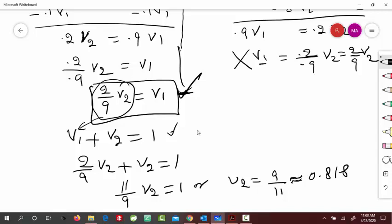And then V1 would be equal to, because the sum of V1 and V2 is 1, so V1 would be 1 minus V2, 1 minus 0.818, so that is equal to 0.182.